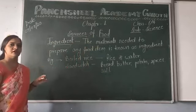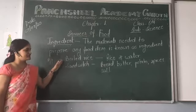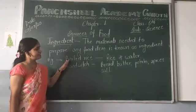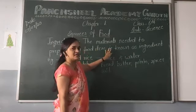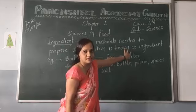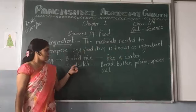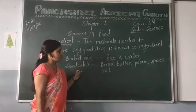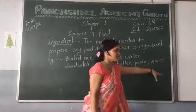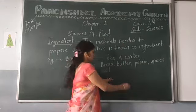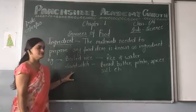Without ingredients, we can't prepare any food item. For example, boiled rice is prepared from rice and water — these are the main ingredients of boiled rice. For a sandwich, we require bread, butter, potato, spices, salt, etc. These are the main ingredients of the food item sandwich.